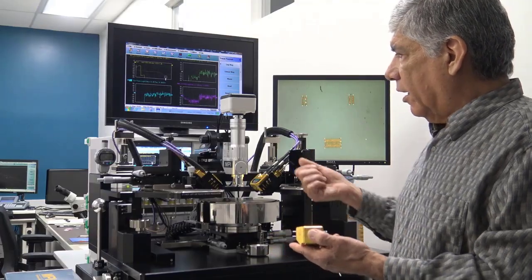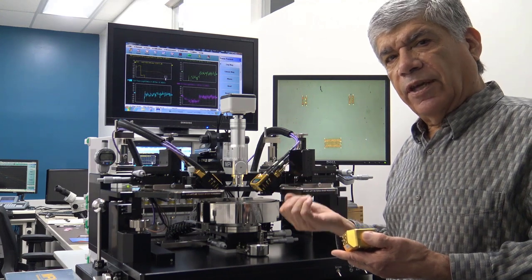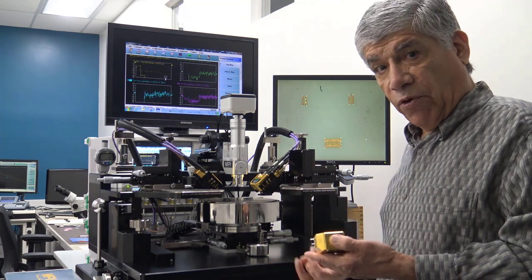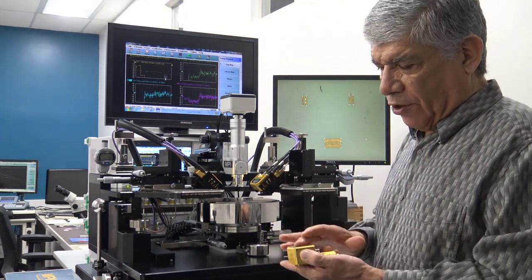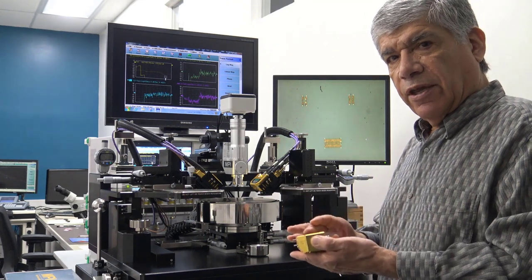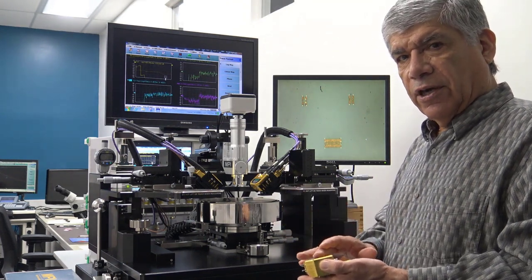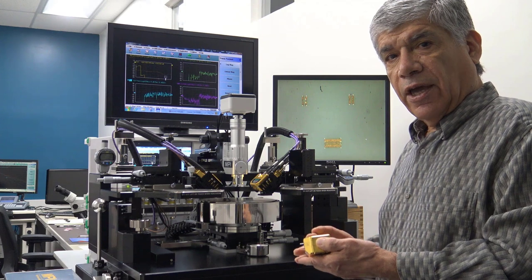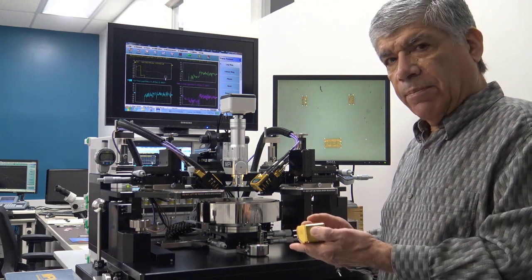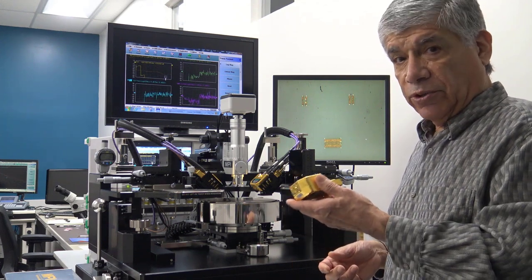The VNA is giving you the baseband frequency from 70 kilohertz up to 54 gigahertz. And then internally we have the sources that go from 54 gigahertz up to 220 gigahertz. And the upper end frequency is dependent on the model of module that you use.